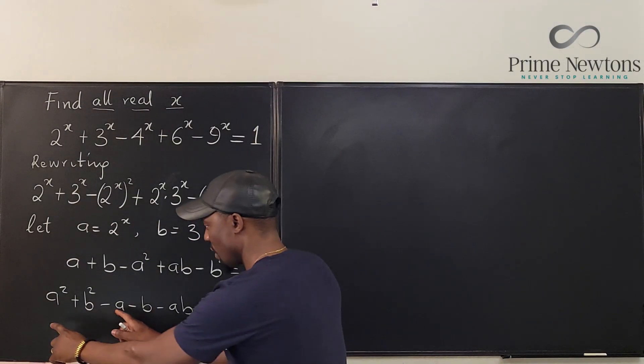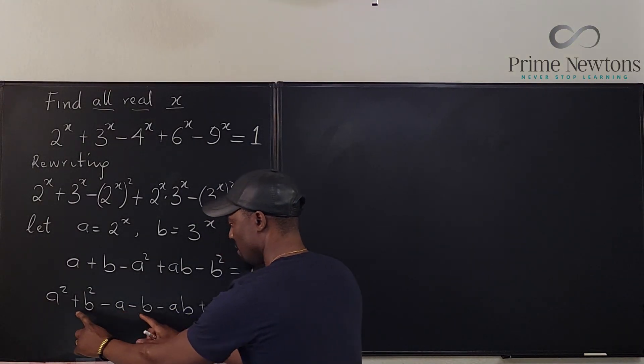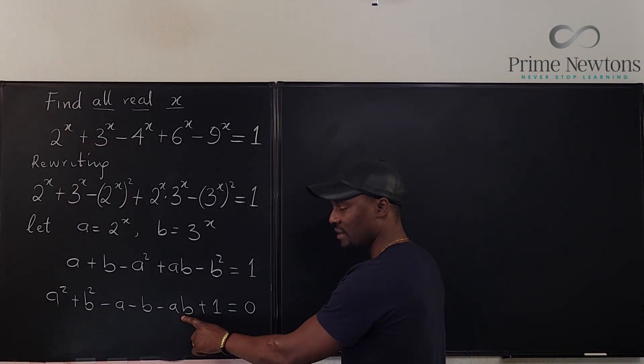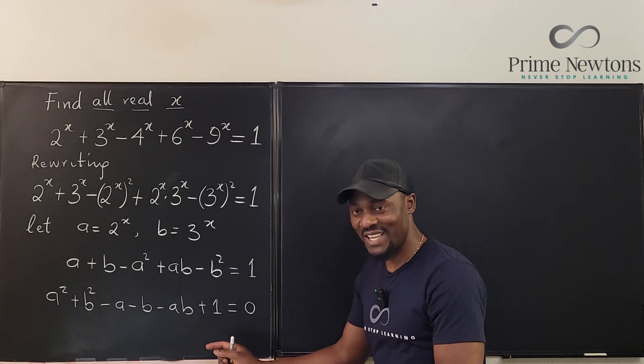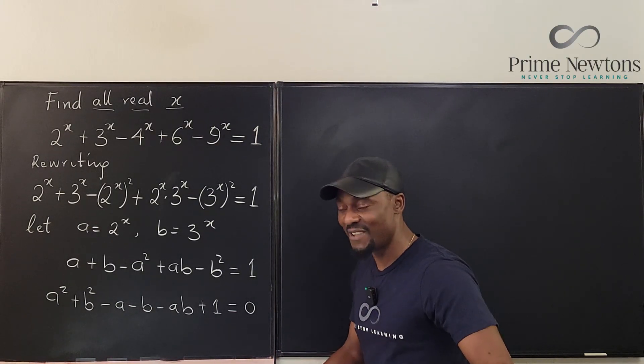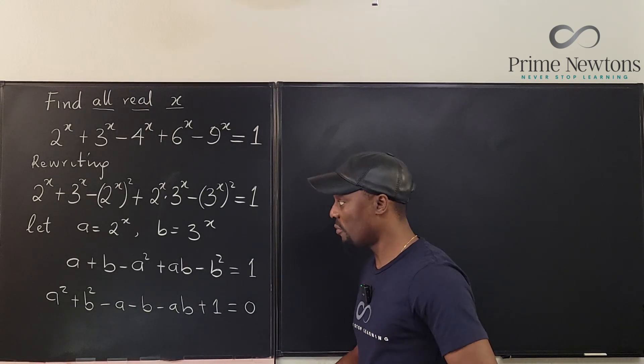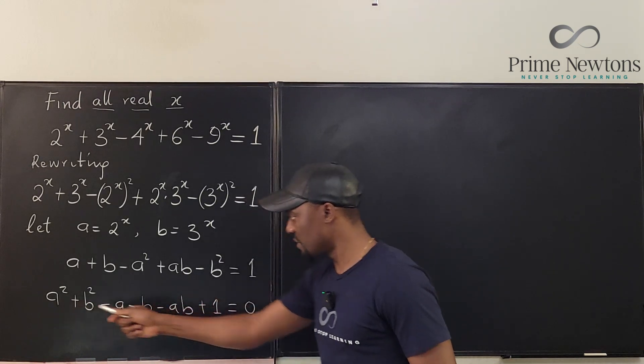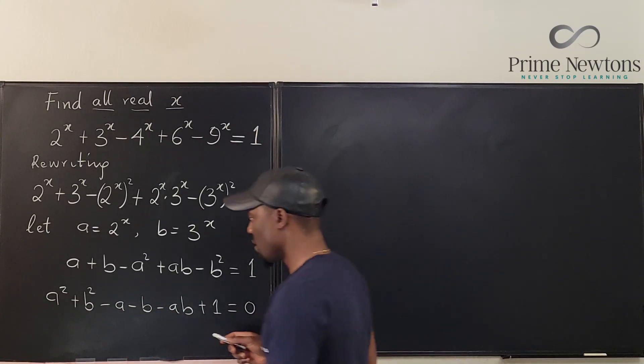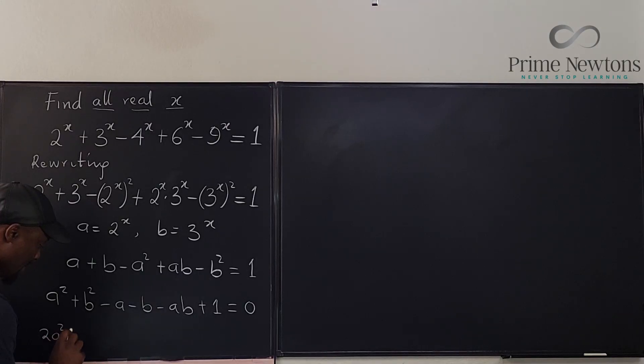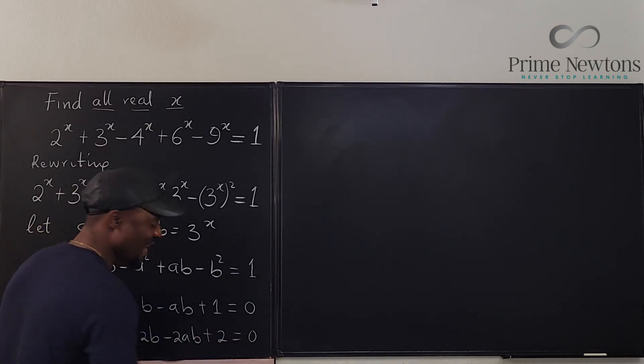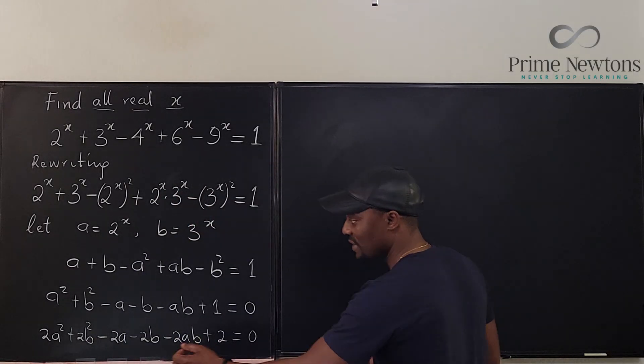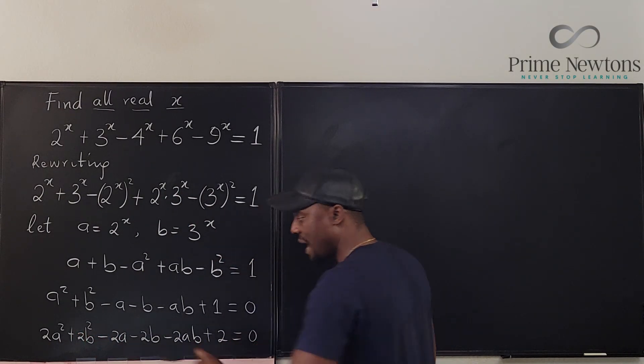I can make this into two different quadratic expressions and complete the squares. To make completing the squares easy, I learned this from number theory class. I'm going to multiply everything by 2, so I have 2a^2 + 2b^2 - 2a - 2b - 2ab + 2 = 0.